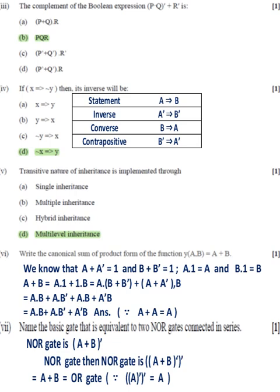Part 3: answer B, PQR. Part 4: answer D, not X implies Y. Part 5: answer D, multilevel inheritance. Part 6: answer A dot B plus A dot B dash plus A dash dot B. Part 7: answer OR gate.